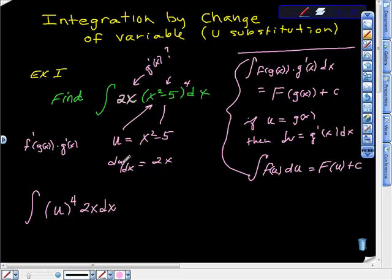So look, if I multiply both sides here by dx, I'm just going to multiply this whole thing by dx, then I'll get that du is equal to 2x dx. Isn't that right? It's 2x dx.